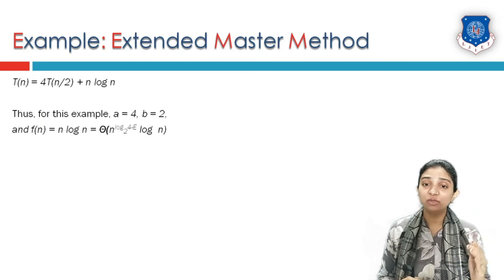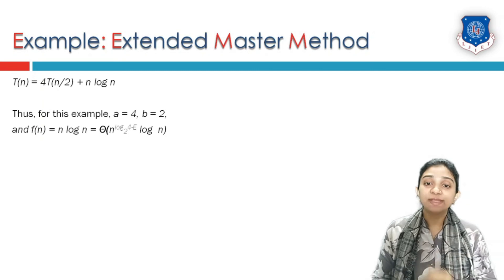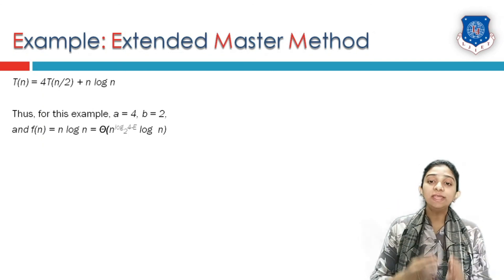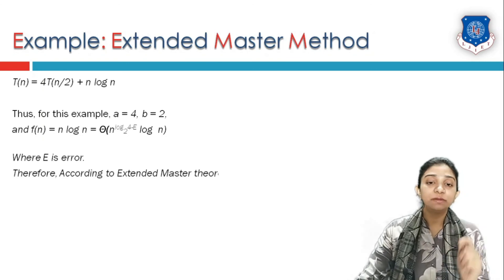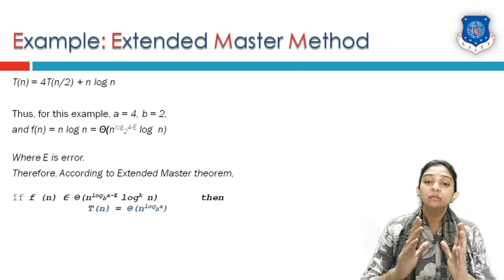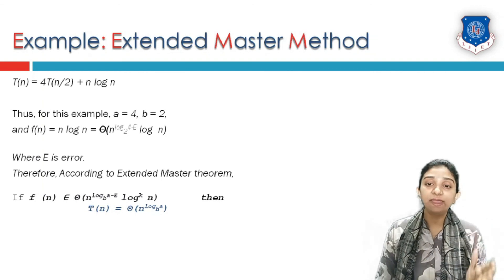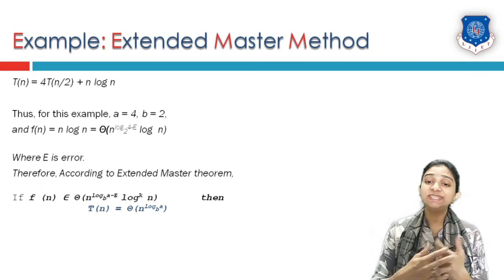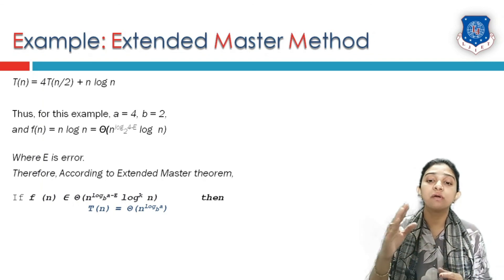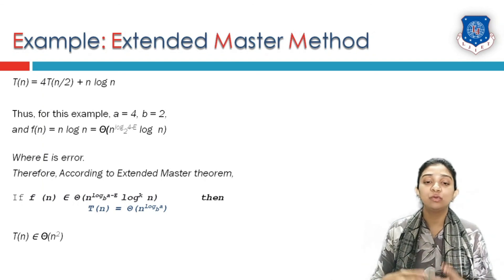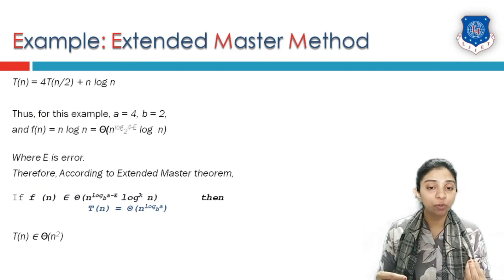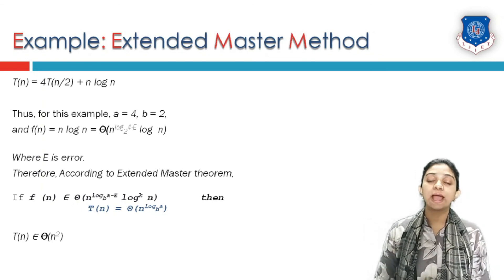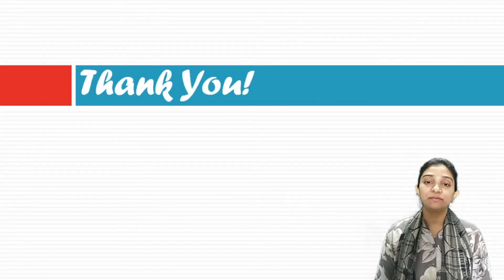Since the power of n in f(n) is 1, which is less than log_2(4) = 2, we subtract some ε: f(n) is in Theta(n^(log_2(4) − ε) · log^k(n)). By extended master theorem Case 3, T(n) = Theta(n^(log_b(a))) = Theta(n^(log_2(4))) = Theta(n²). This is how extended master theorem and the simple master theorem work. Thank you everyone for watching.